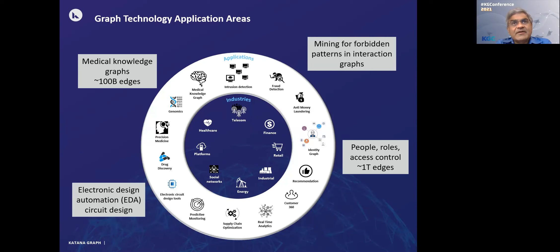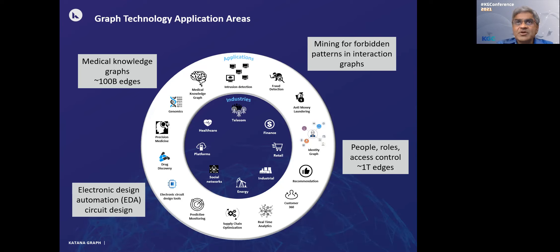Where do these property graphs arise — what application areas, what verticals? The circle in the middle of my chart shows some of the areas in which we have seen a use for graphs. I'm going to focus on a handful of the more important ones. At the top right of the circle, you have security. Graphs are very big in security — in particular in areas like intrusion detection, fraud detection, and anti-money laundering.